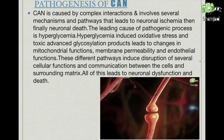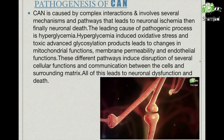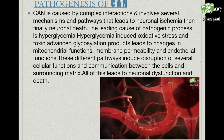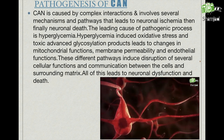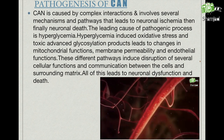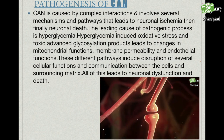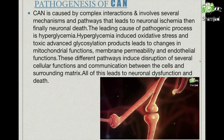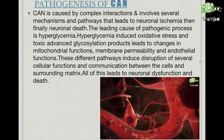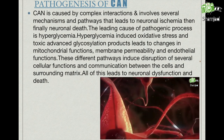The leading cause of the pathogenic process is hyperglycemia. Hyperglycemia-induced oxidative stress and toxic advanced glycosylation products lead to changes in mitochondrial functions, membrane permeability, and endothelial functions. These different pathways induce disruption of several cellular functions and communication between the cells and surrounding matrix, all of which leads to neuronal dysfunction and death.